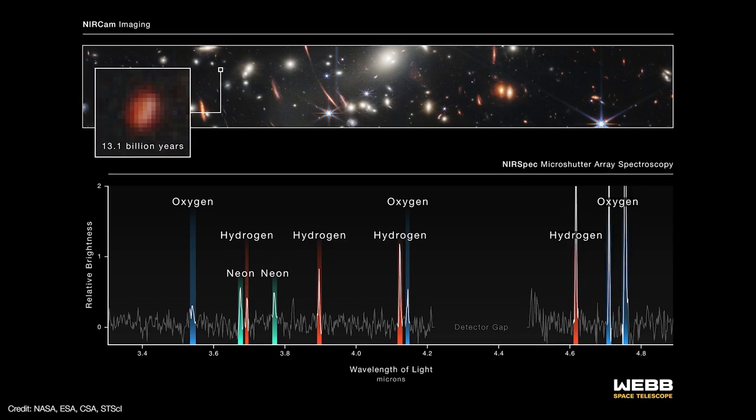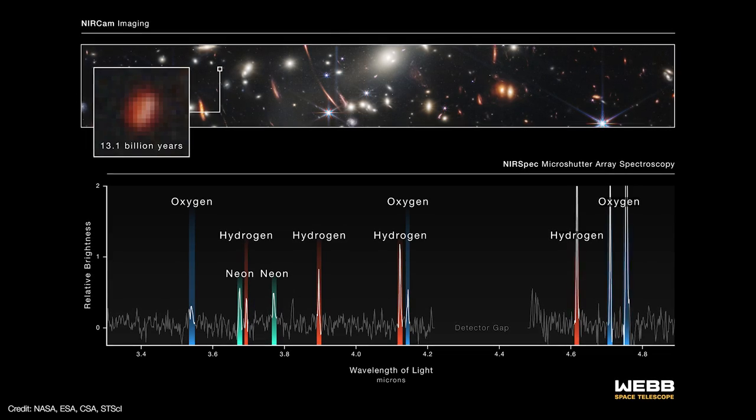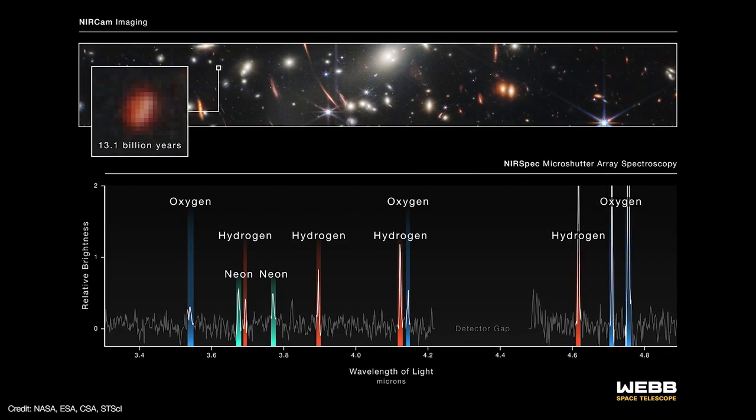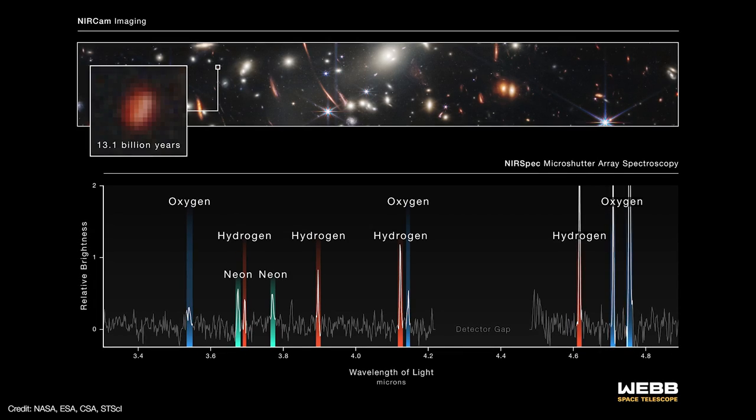Well, think about that for a minute. The light from this galaxy traveled for 13.1 billion years before ending its journey on Webb's detector. These observations mark the first time these particular emission lines have been seen at such incredible distances. And by the way, this is only among Webb's first observations. There could be even more distant galaxies in this very image. In fact, they're already calling this image Webb's first deep field.